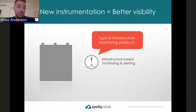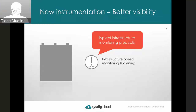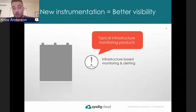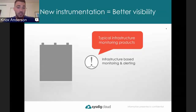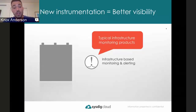Diane asks about the requirements for installing the kernel module. Knox explains the only requirements are that it's running on a Linux host and that the agent is allowed to run as a root process or a privileged container, which allows installation of the kernel module. On performance impact: the agent is very efficient, typically having between 1 and 1.5 percent CPU overhead on the host, and sending data to the back end at around four kilobytes per second—minimal impact overall.